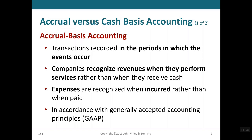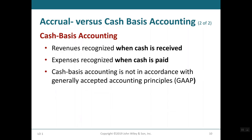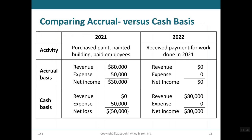Accrual basis accounting is in accordance with GAAP. We also have cash basis accounting, which does not satisfy GAAP. Cash basis recognizes revenue only when cash is received and recognizes expenses only when cash payment is actually made — you don't record anything in your books until cash has actually been exchanged.